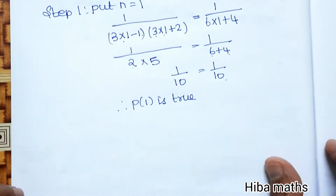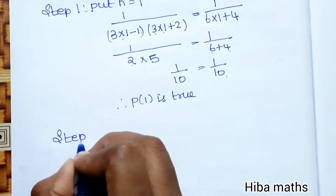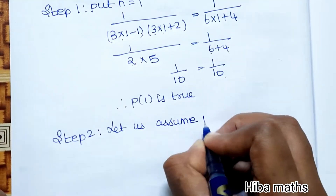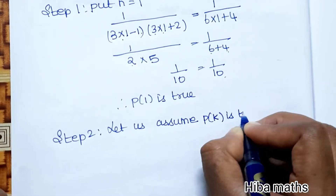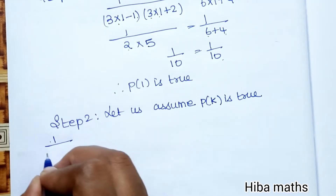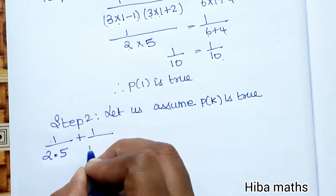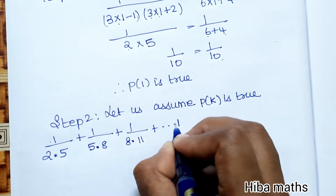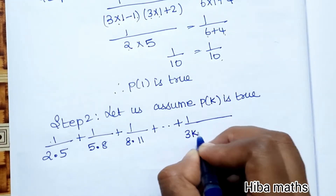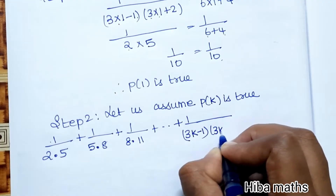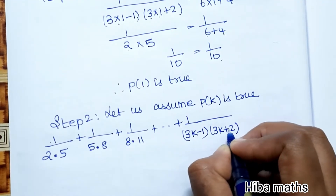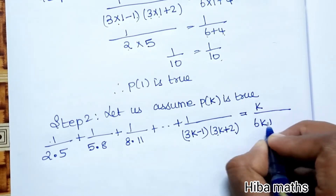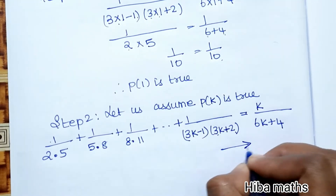Step 2: Let us assume P(K) is true. That is, 1/(2×5) + 1/(5×8) + 1/(8×11) + ... + 1/((3K−1)(3K+2)) = K/(6(K+4)).